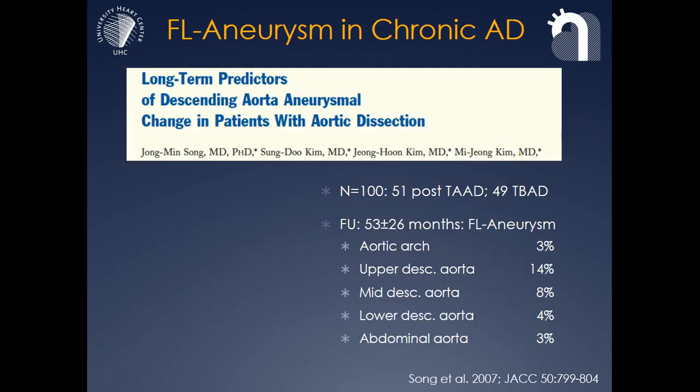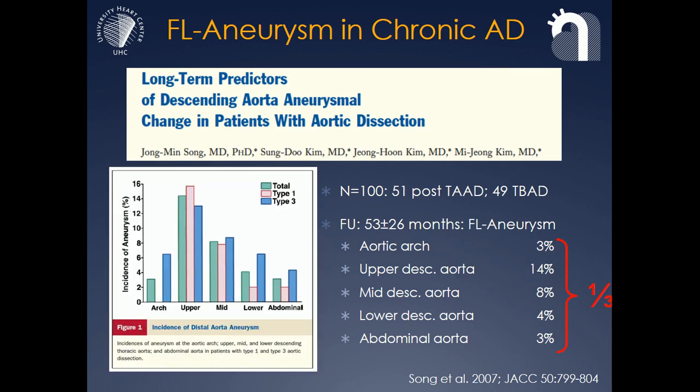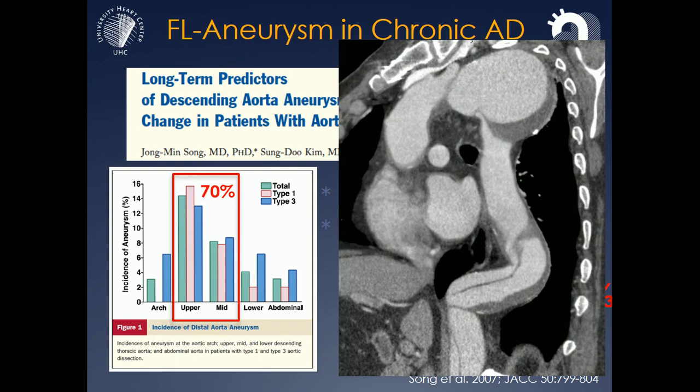This is the most interesting study about natural history of chronic type B and type A dissection after repair. Again, it shows this one-third of patients that develop a false lumen aneurysm in the aorta. Most interestingly, this study also looked at the segment of aorta where these false lumen aneurysms develop, and it shows that it's the upper and mid part of the descending aorta, with this being a typical example.